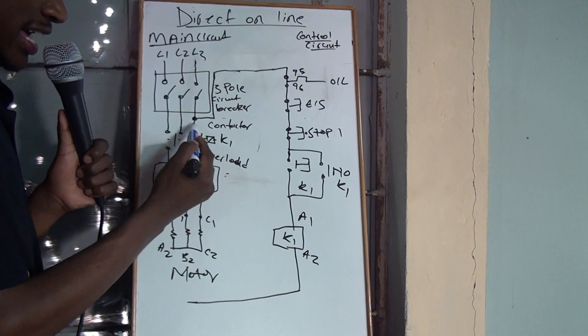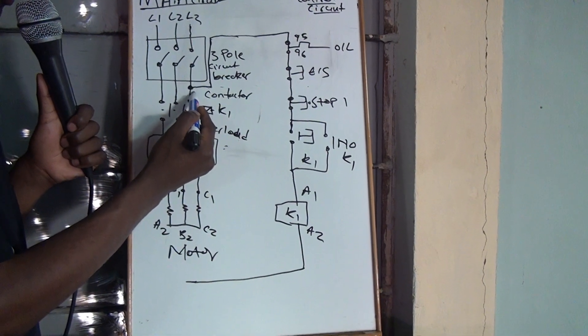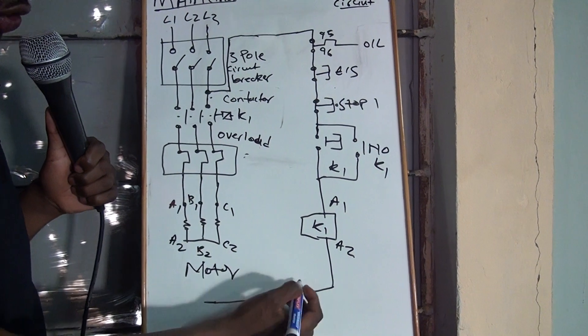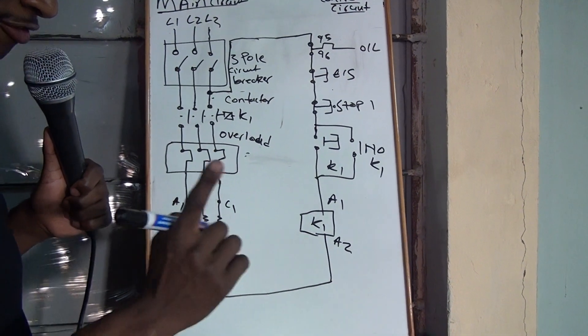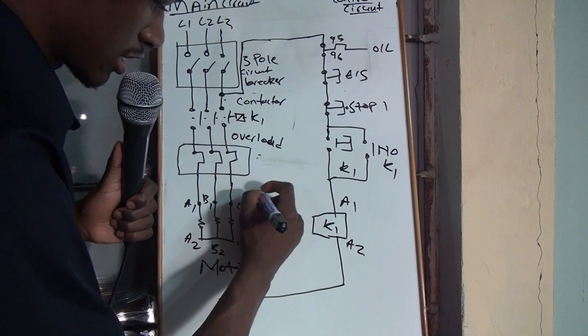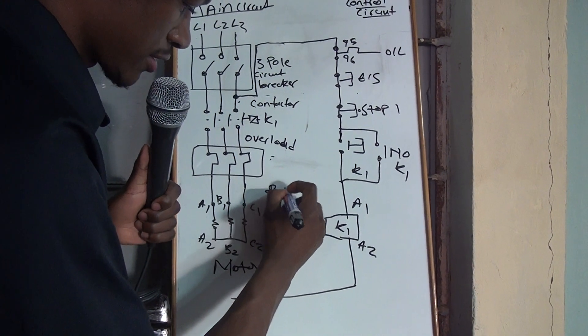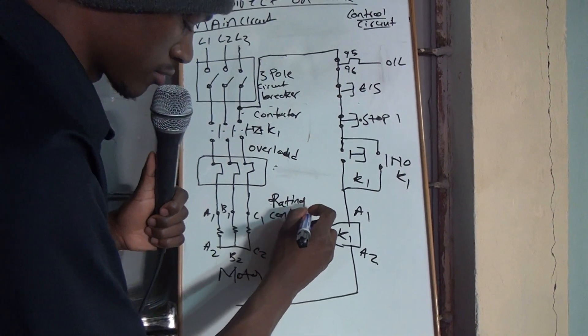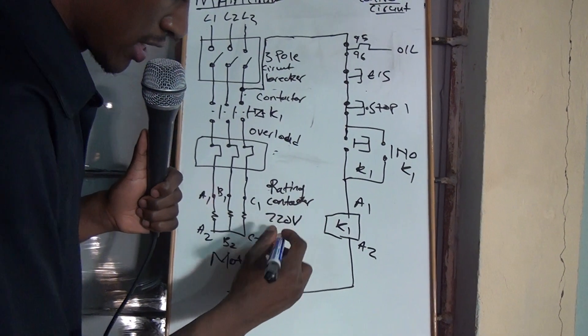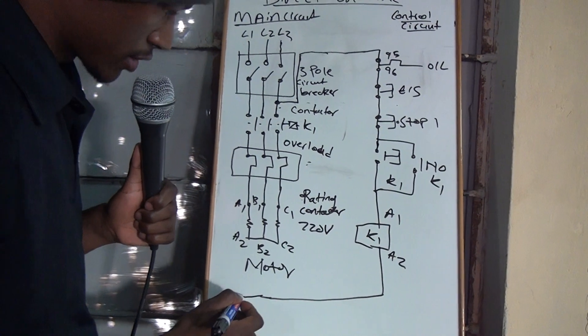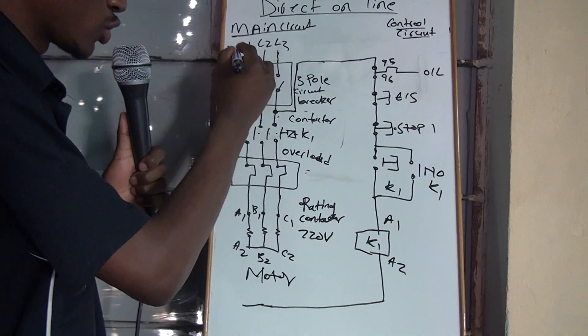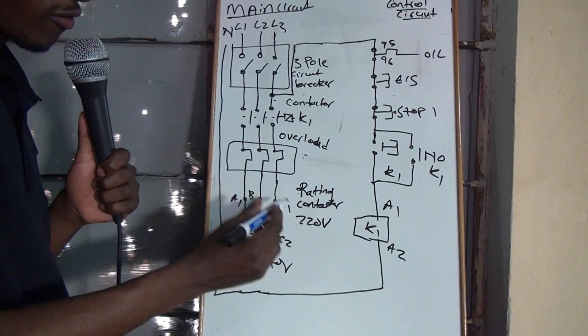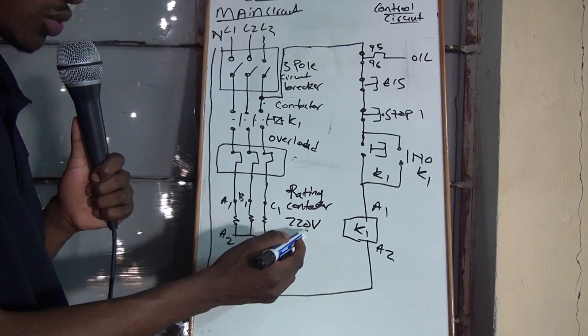So, your line 3, you put it on line 3, but after the circuit breaker. And then, when you connect your A2, if the rating of your contactor is 220 volts, it means that you'll return this to neutral. So, you'll introduce a neutral. Then, your neutral comes here. That's because the rating of the contactor is 220 volts.